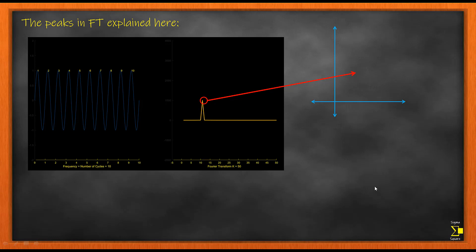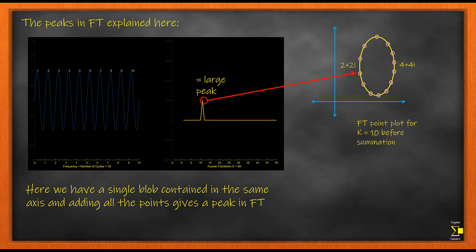So what happens at k equal to 10? You get a single block, you don't get a symmetrical block. The single block is contained in the same quadrant, which means your points are all of the same sign. When you add these points, you end up getting a larger value, and that larger value turns up as a large peak in your frequency graph.